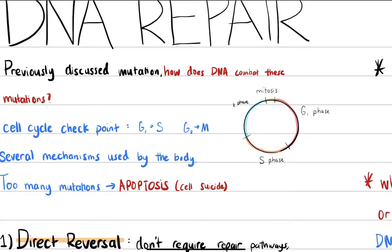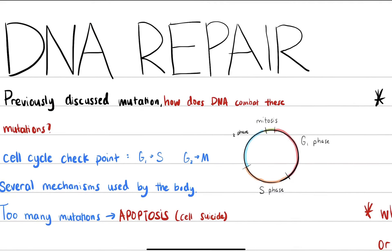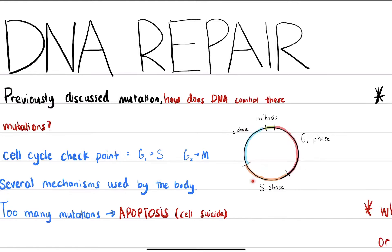When cells are being duplicated, we have the G1 phase and the S phase where the DNA is replicated. The transitions between these phases have checkpoints, and these checkpoints are making sure that DNA is being replicated well and that everything else in the cell is being replicated properly.